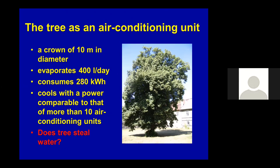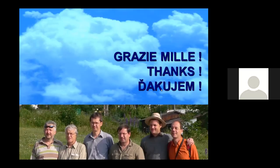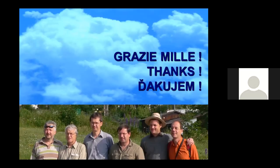One tree evaporates about 400 liters of water per day, consuming around 280 kilowatt-hours — so it is a cooling system. I think I'm finished. I just wanted to show that we need vegetation. Vegetation makes the climate for us. Thank you.